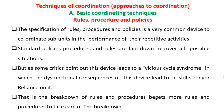But as some critics point out, this device can lead to a vicious cycle syndrome, in which the dysfunctional consequences of the device lead to a still stronger reliance on it. The vicious cycle syndrome is a condition in which a disorder gives rise to another that subsequently affects the first — that is, the breakdown of rules and procedures leads to more rules and procedures to take care of the breakdown.